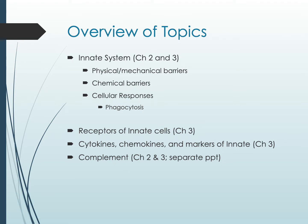Both chapters 2 and 3 contain overview information on the innate system, including physical and mechanical barriers, chemical barriers, and cellular responses. Cellular responses include phagocytosis, inflammation, and related processes. Chapter 3 also covers receptors of innate cells, cytokines, chemokines, and markers found on innate cells.